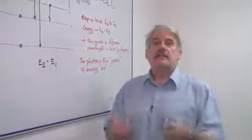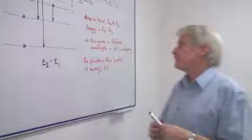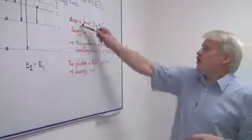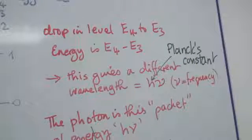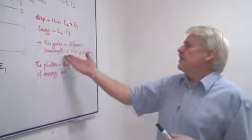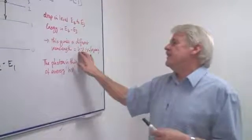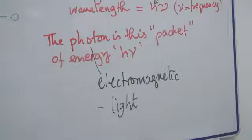And the answer is, it goes into a photon. So a drop in level, say from E4 to E3, the energy associated with that is E4 minus E3. And this gives a packet of energy, which we call a photon, which is described as H nu.